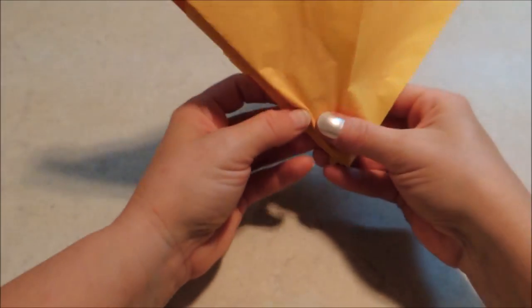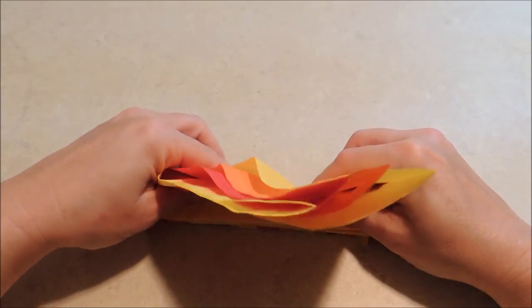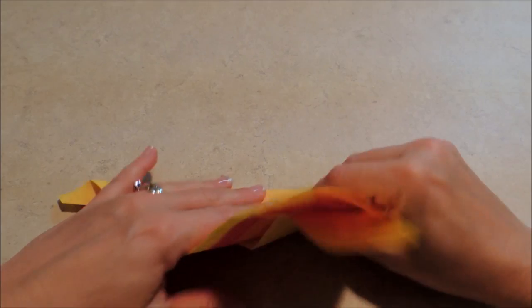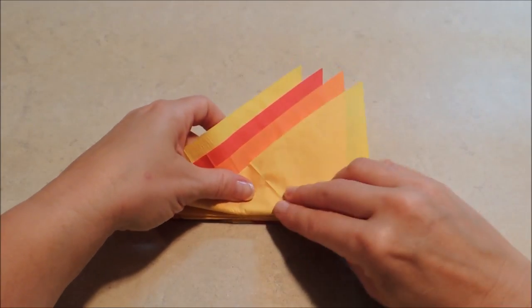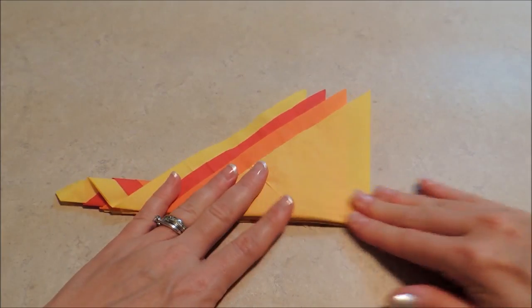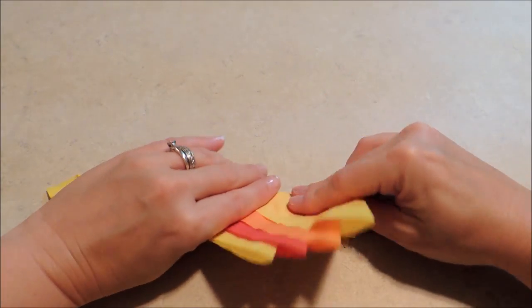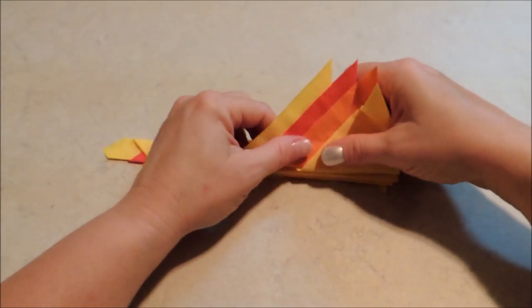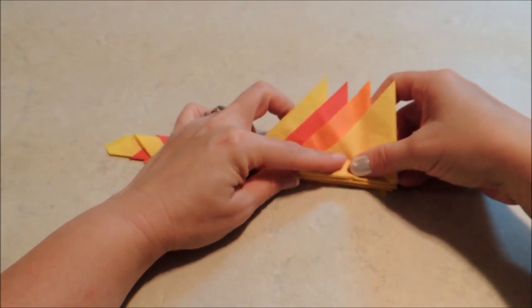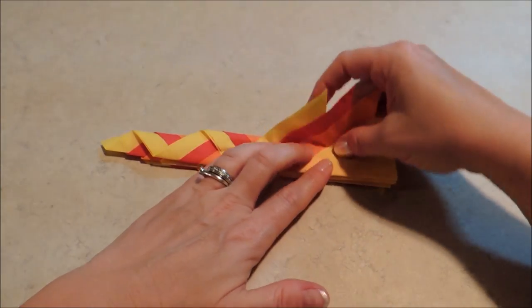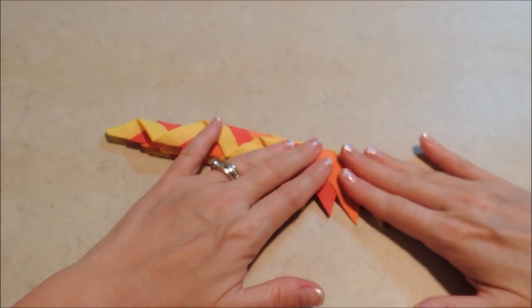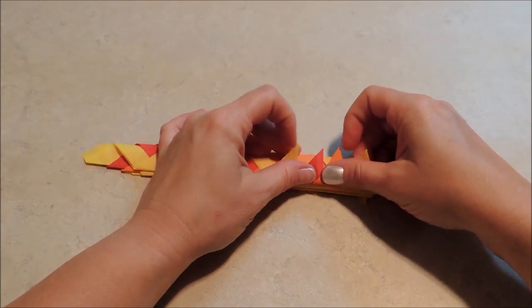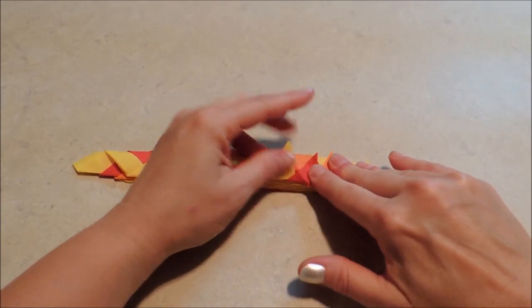Okay, now flip it, and we'll accordion fold the other half. Make sure to try to keep those layers staggered as you go, so that our flames will get taller in the middle. The last fold on those tips.